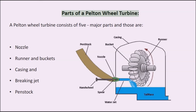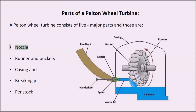Parts of a Pelton wheel turbine. A Pelton wheel turbine consists of five major parts: nozzle, runner and buckets, casing, braking jet, and penstock.